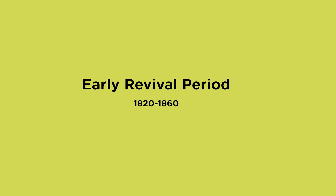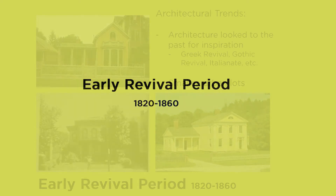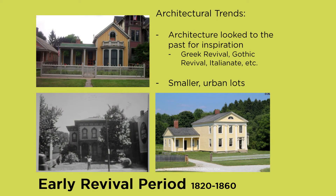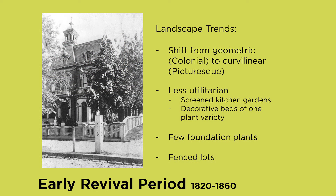Moving forward in time, next we get to the early revival period. Within this period, architecturally, designs looked to the past for inspiration. Predominant styles we see are Greek Revival — shown here at Hale Farm and Village — Gothic Revival on the west side, and Italianate, a property that still exists on St. Clair. These were oftentimes smaller, more urban lots as populations moved more towards cities. This period saw the beginning of a shift from geometric designs, seen as colonial and European, to more curvilinear and picturesque styles.